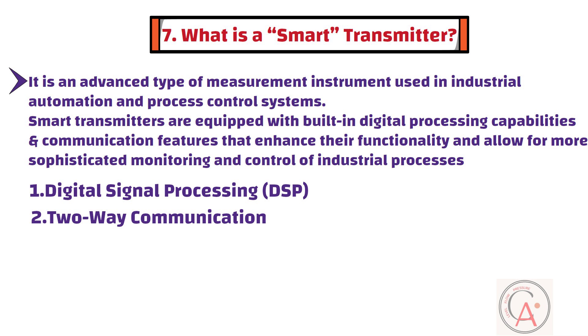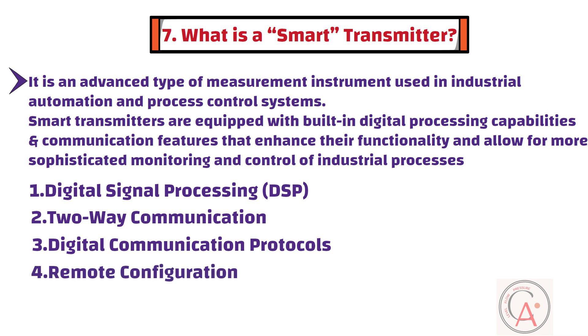Here are the key characteristics and features of smart transmitters. The first characteristic is digital signal processing, which allows them to perform complex calculations and signal conditioning tasks internally. The second characteristic is two-way communication with control systems and other devices. The third characteristic is digital communication protocols such as HART or Foundation Fieldbus. The fourth characteristic is remote configuration. The fifth characteristic is diagnostic information about sensor health, internal temperature, and potential issues or failures for predictive maintenance.